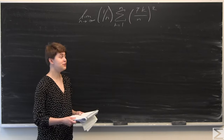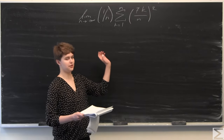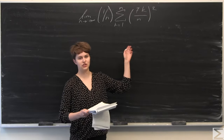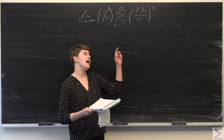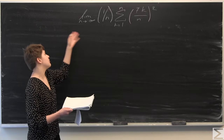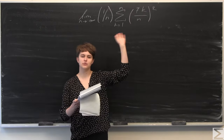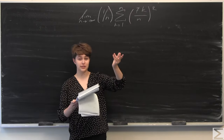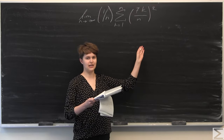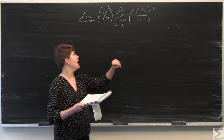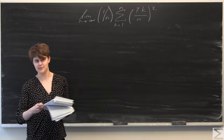So what we're going to do first is we're going to try to pull out terms from the summation that don't involve k. And then we're going to simplify the summation using properties of summation, or rules for simplifying things inside of a summation. And then finally, we're going to evaluate the limit.